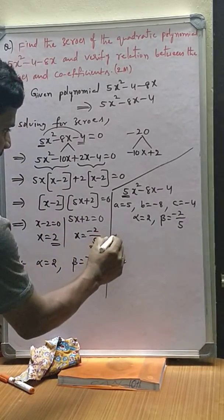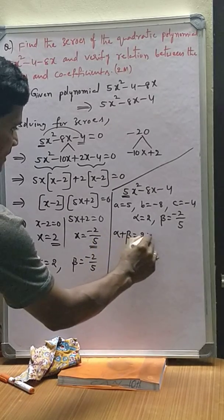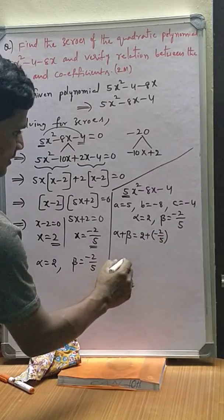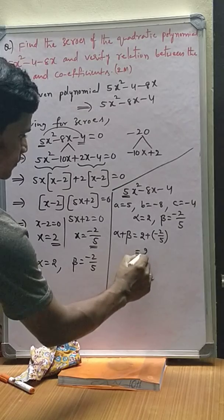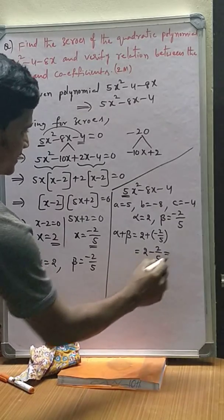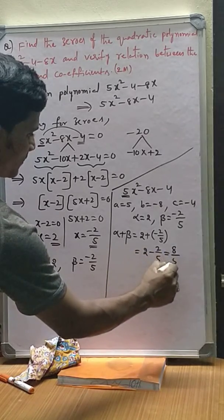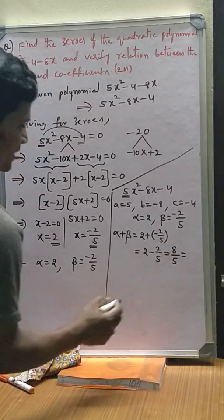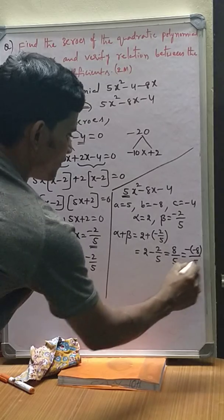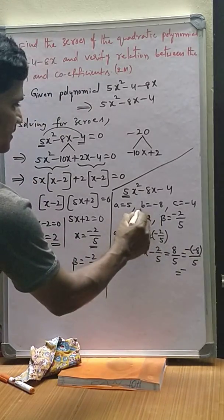α + β = 2 + (-2/5) = 2 - 2/5 = 10/5 - 2/5 = 8/5. It can be written as -(-8)/5. That means -b/a, where b = -8 and a = 5.